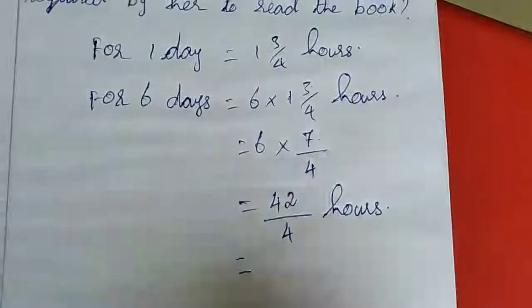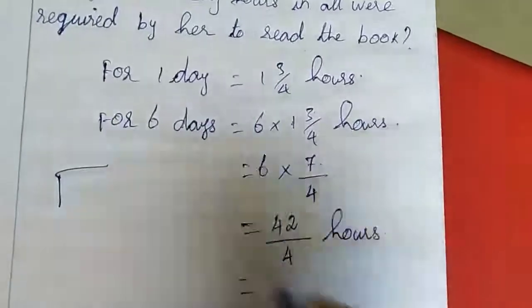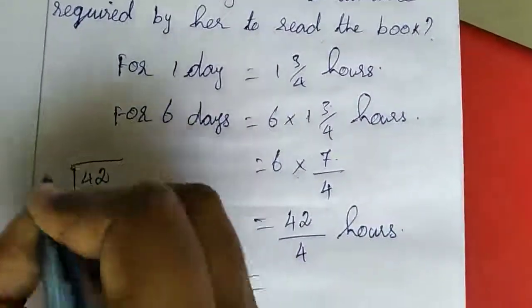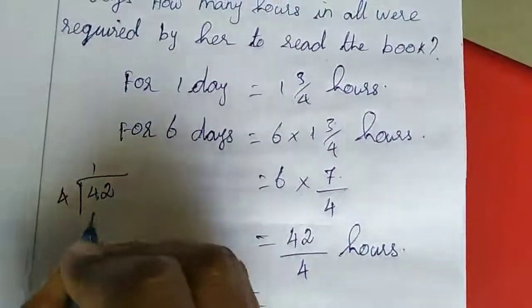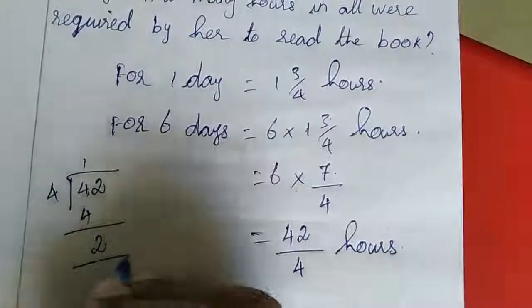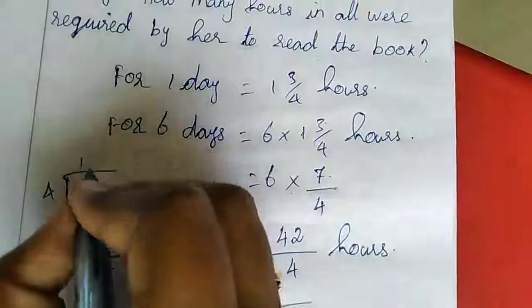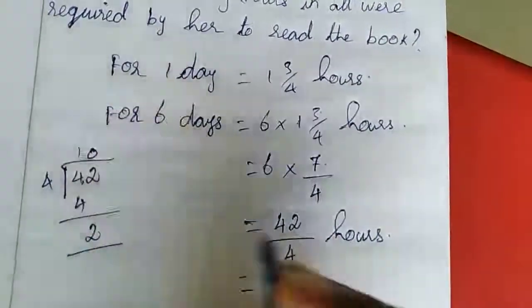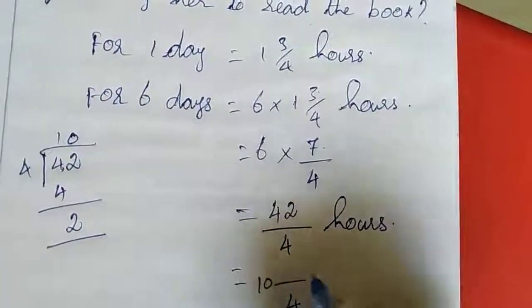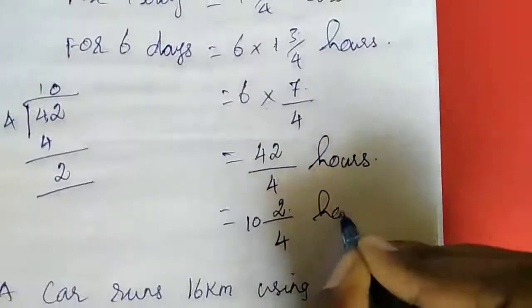This one we can change to a mixed fraction also if you want. 42 divided by 4: one four is 4, remainder 2. So 10 and 2/4 hours.